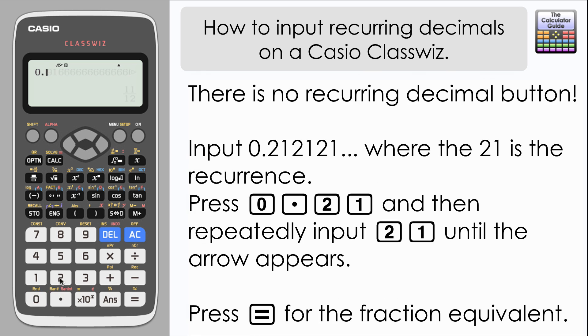The final example: I'm going to input a two-digit recurrence, 0.21 recurring. This time you have to input the recurrence 2-1 repeatedly until you see the arrow on the left-hand side. At this point, press equals and here we have the fraction equivalent: 7/33.